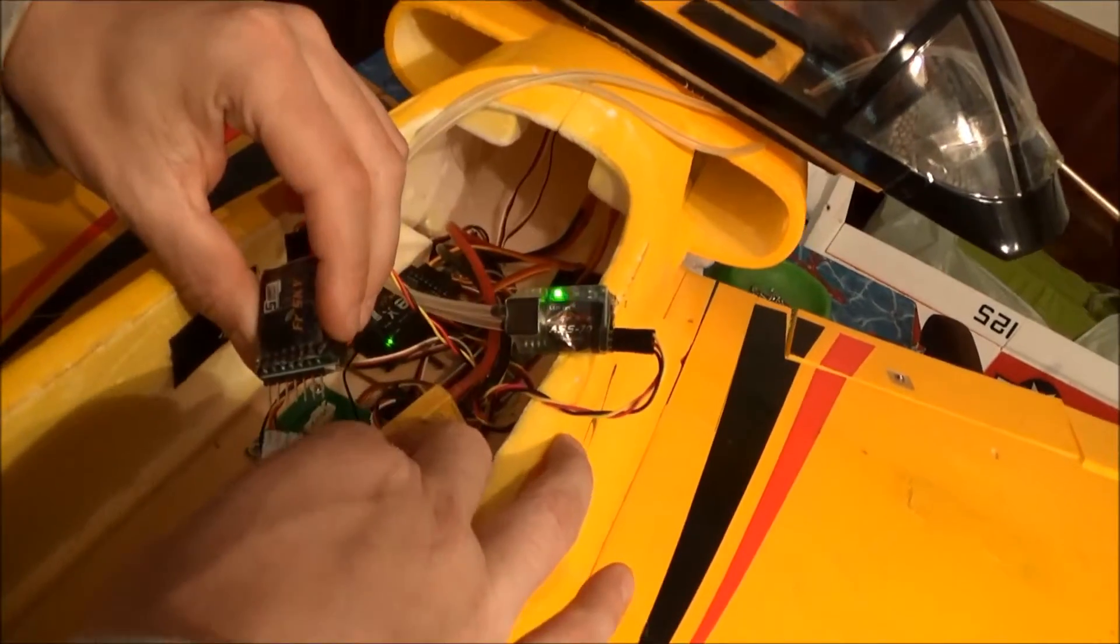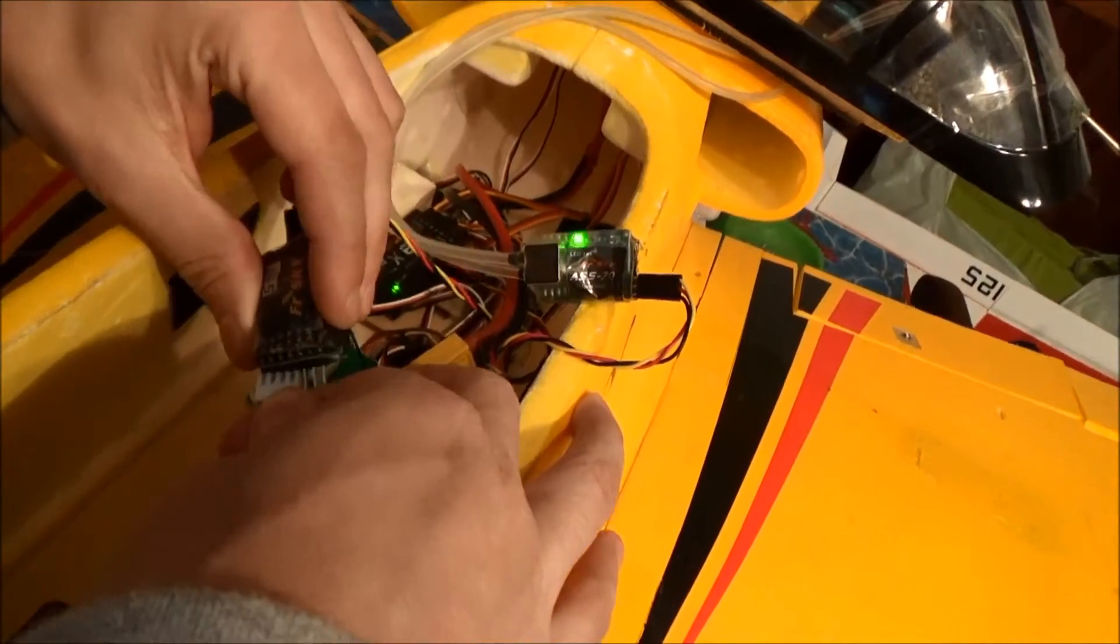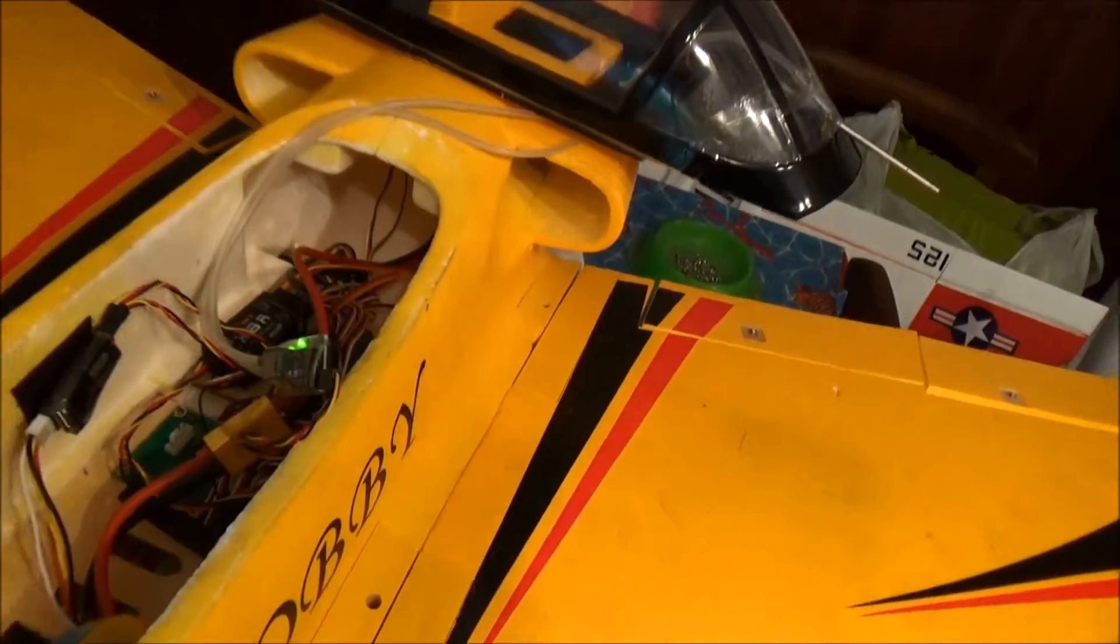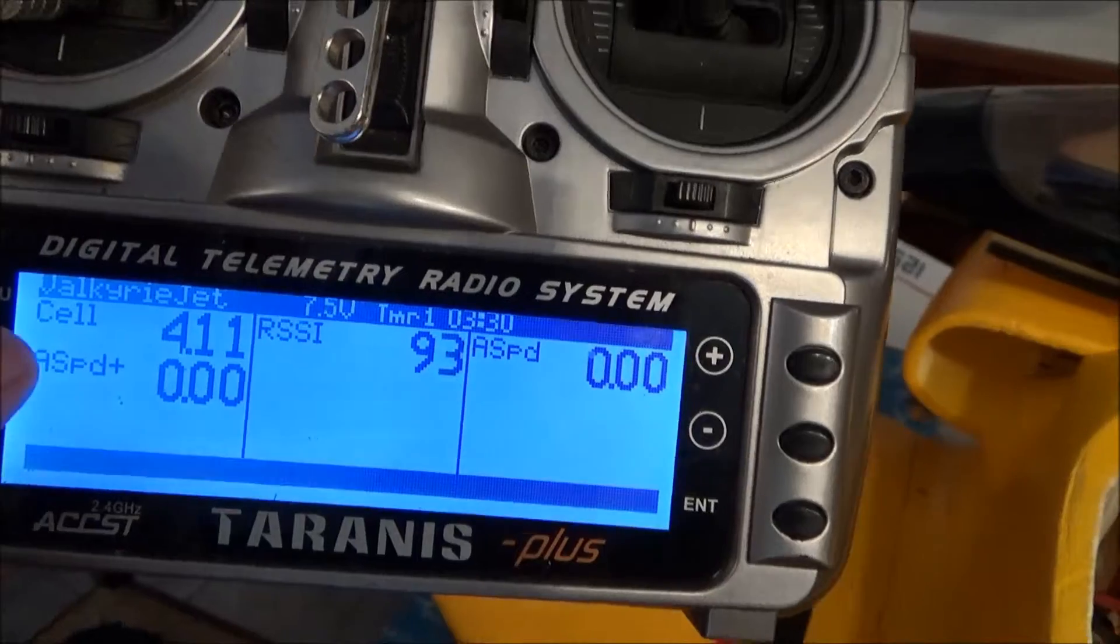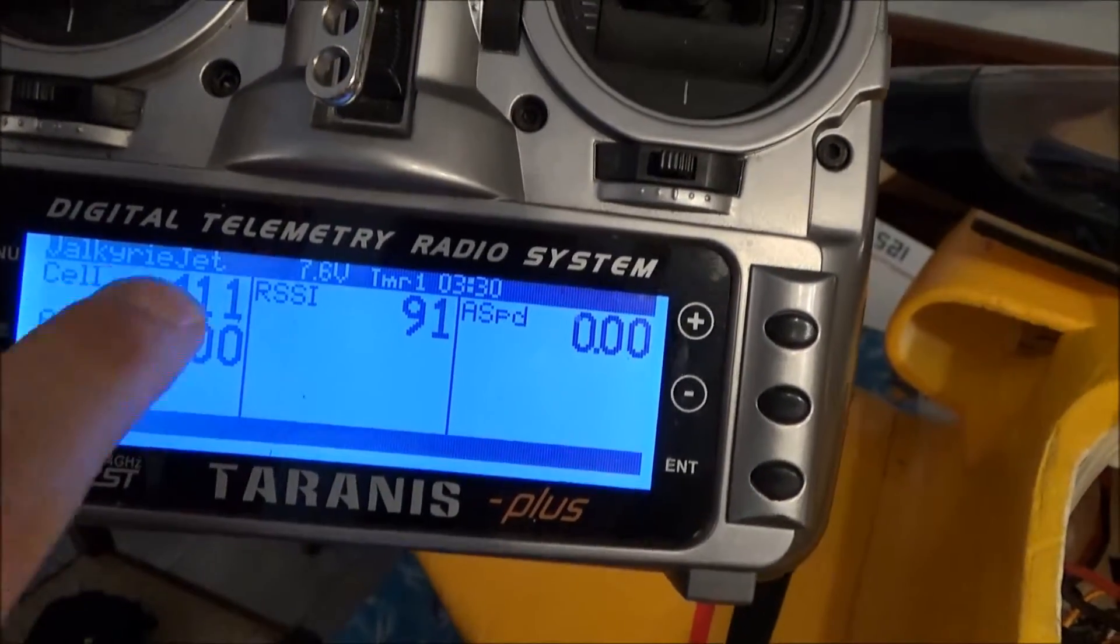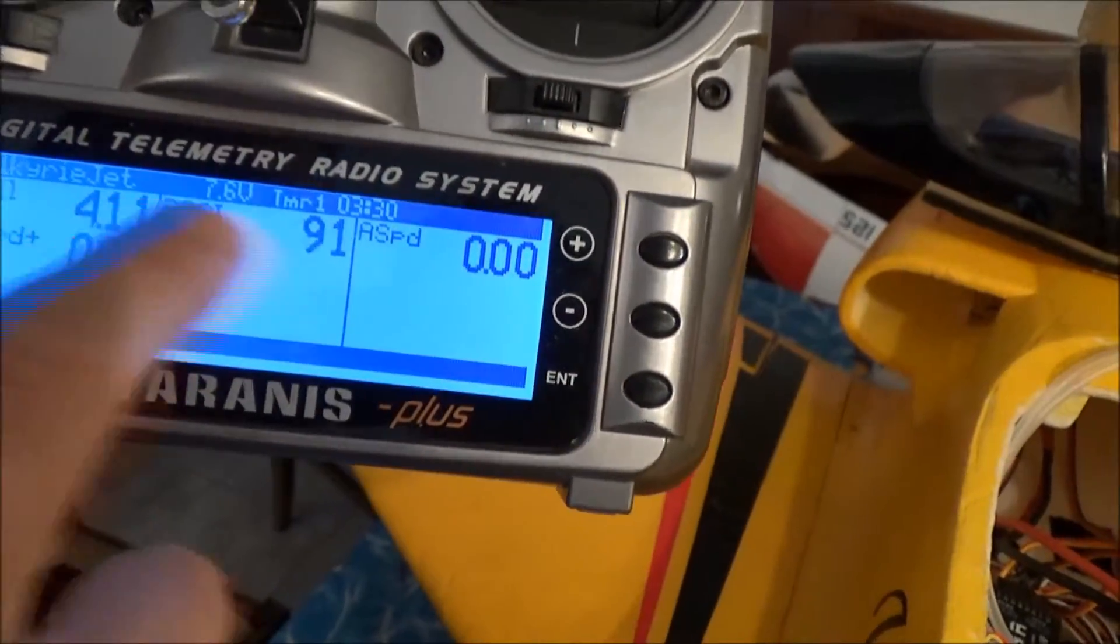As you can see, I connected the LiPo to this sensor and it appears on my telemetry radio. Now here I have the cell, the lowest cell, and the RSI, the A-speed with the pitot tube.